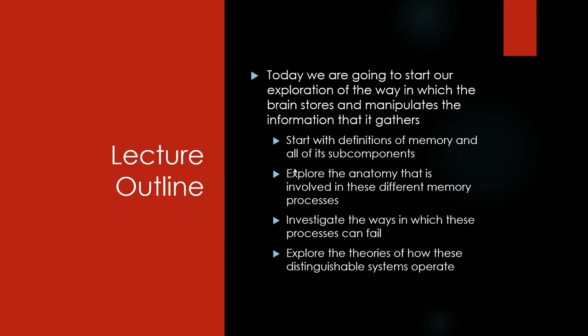There are a lot of different facets to memory, a lot of different angles we can look at, and all these different types of memory rely on different systems. We're going to start with definitions of what all these memory processes are and how we've differentiated them. We'll do a surface level look at the anatomy, look at ways these mechanisms can fail — amnesia and lesion-type studies — and then explore how people are starting to think about these different mechanisms.